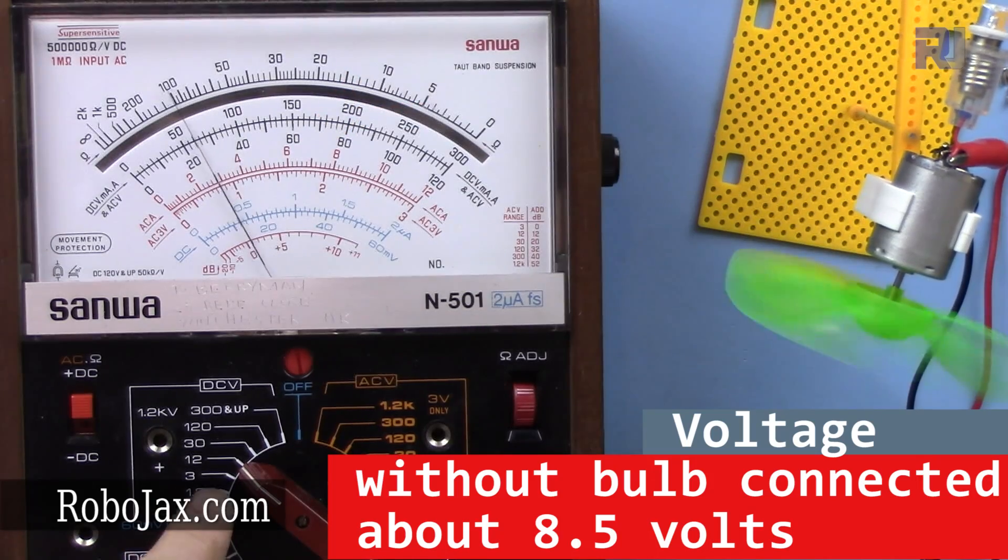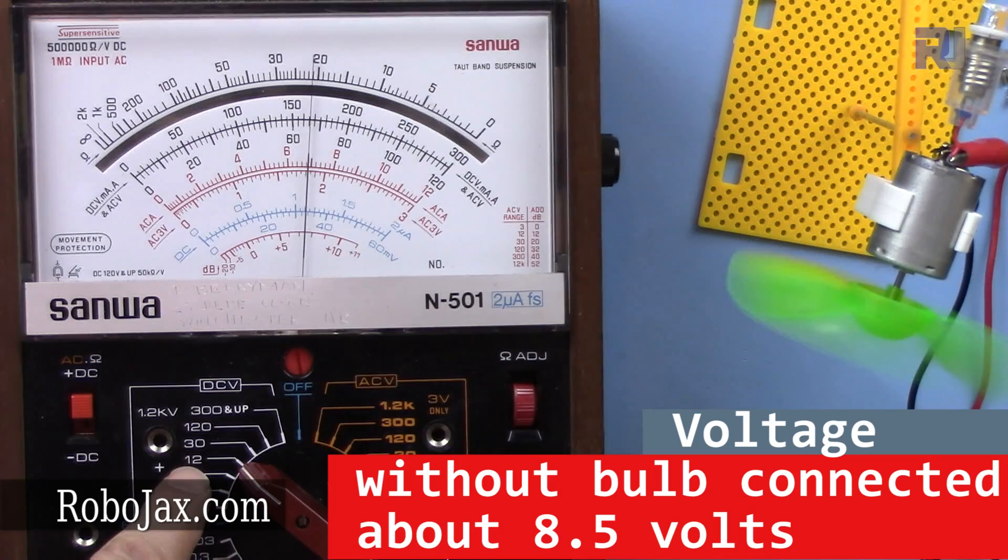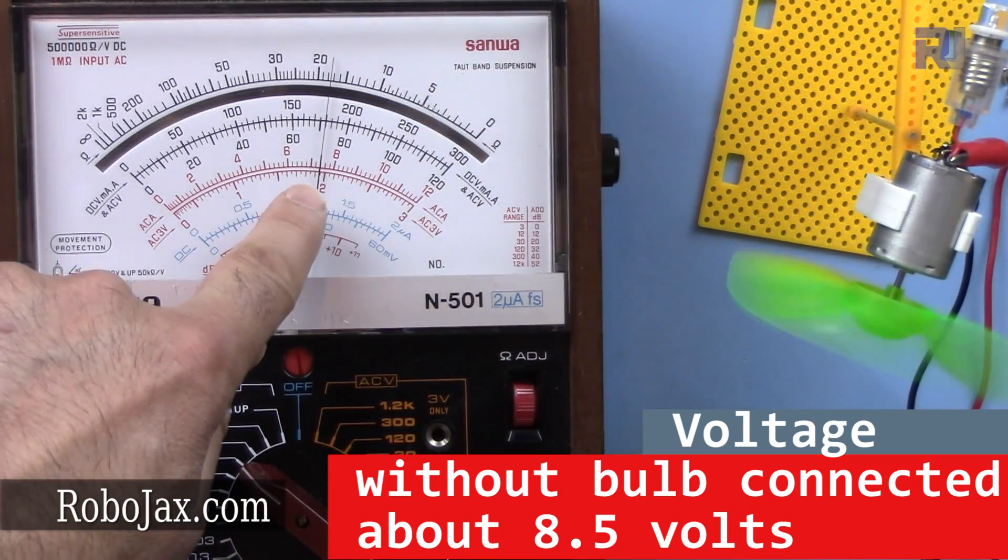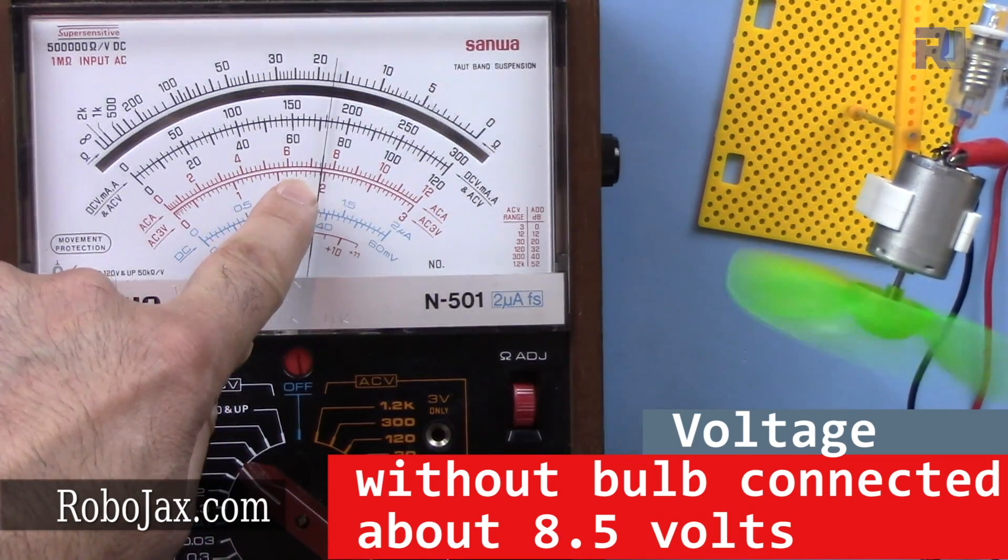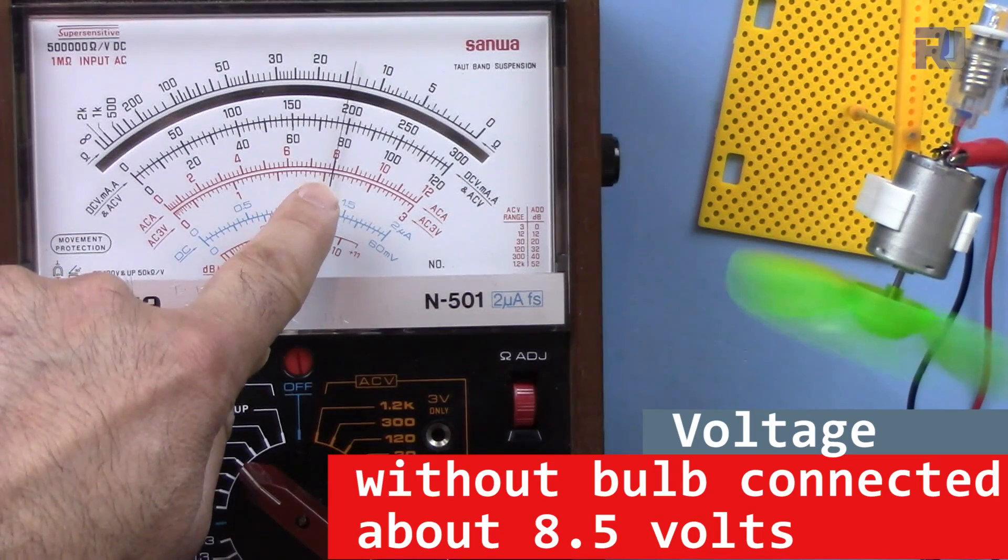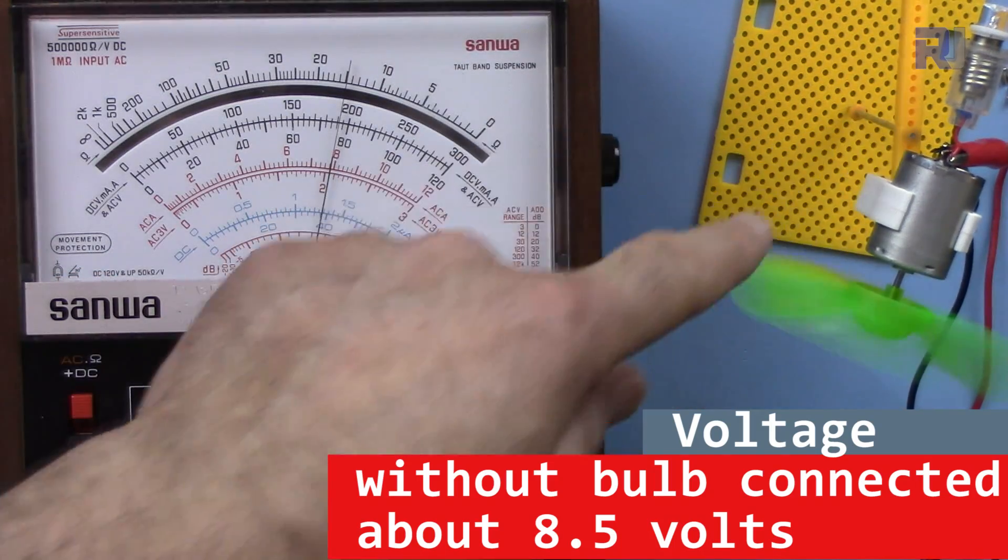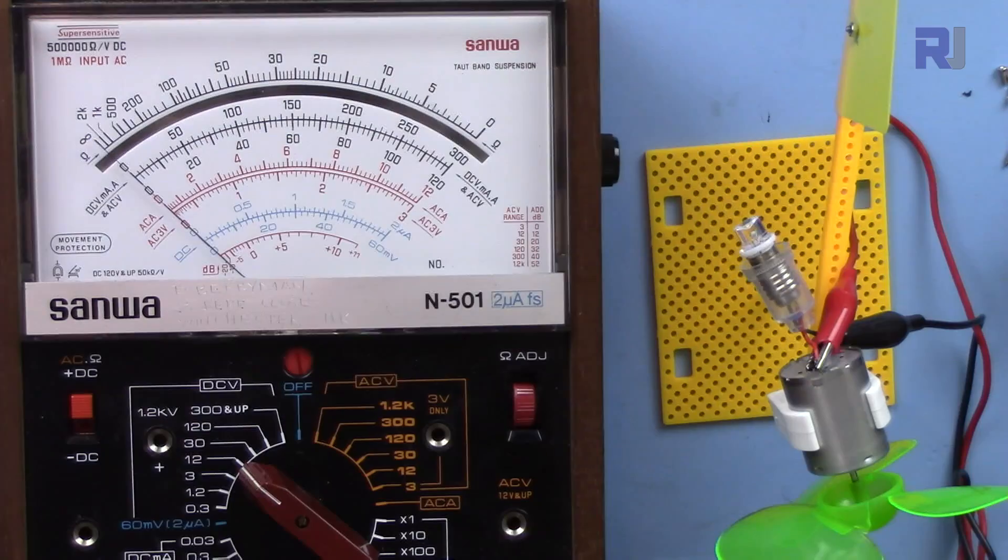So now this is 12 volts. If I put this at 12, that is 12 volts, we are getting almost 8 volts. Now the light is off, so let's try it again.